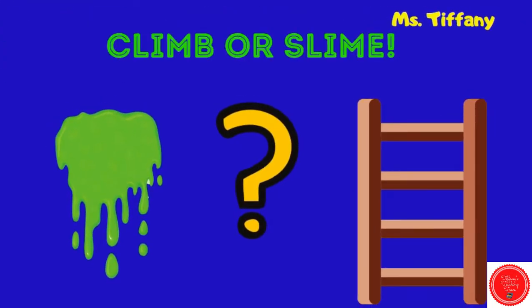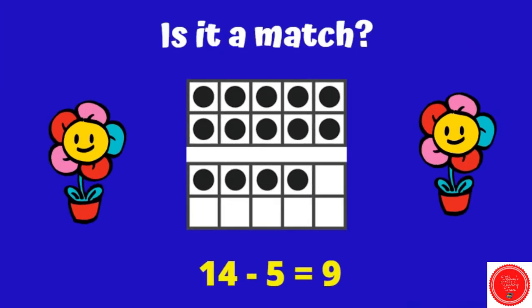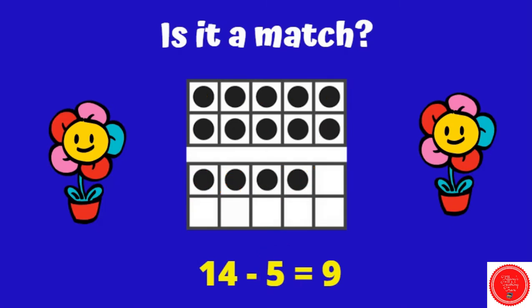Let's play Climb or Slide. If there's a match, we get to climb the ladder. If there's not a match, we get slime. 14 minus 5 equals 9. So we have 14 — how many do we need to take away? 5. Let's see: 1, 2, 3, 4, 5, 6, 7, 8, 9 left. This one is a match, so we get to climb.